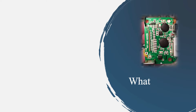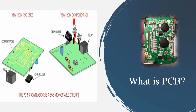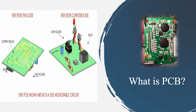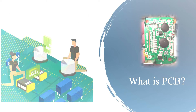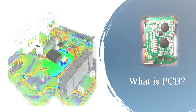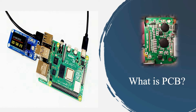A printed circuit board, or PCB, is a flat, rigid board made from non-conductive material that serves as a base for assembling electronic components. It provides a mechanical and electrical connection between various components, allowing for a compact, organized, and reliable electronic system.